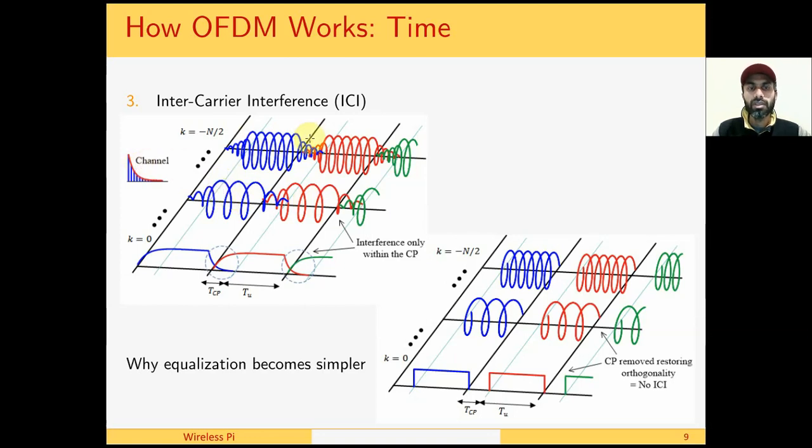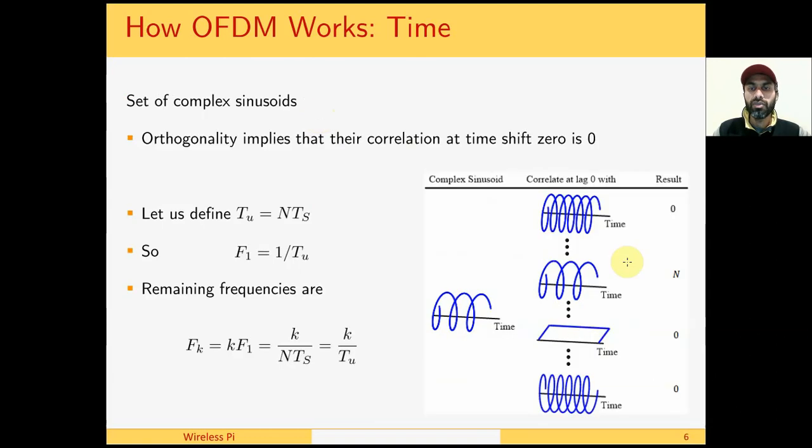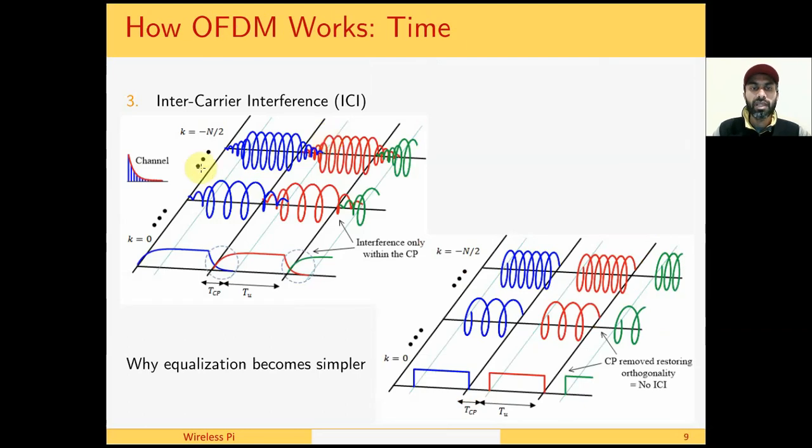After the convolution with the channel, their length increases, and we know that they are only orthogonal within a duration of an integer number of periods. Therefore, the channel destroys the orthogonality. However, we see that the channel can only affect the region where the cyclic prefix lies. And if we discard the cyclic prefix at the receiver, these set of parallel waves become orthogonal again.